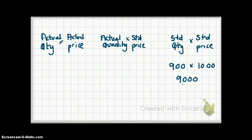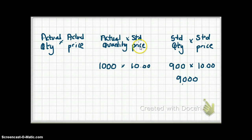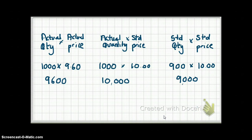Now we flex the quantity to reflect actual quantity. The actual quantity purchased and used was 1,000 pounds. We keep the standard price of $10, giving us $10,000 in the middle column. Then for the left-most column, actual quantity was 1,000 pounds at an actual price of $9.60, giving $9,600.